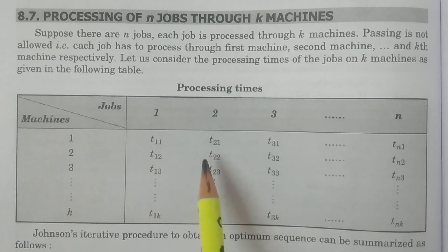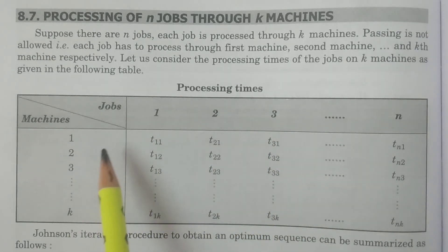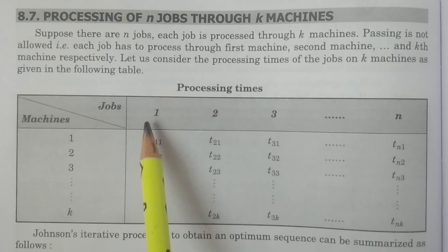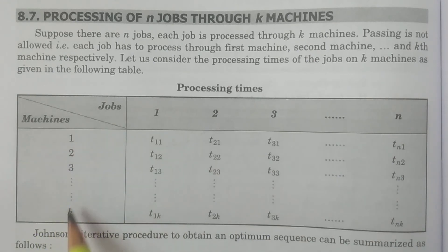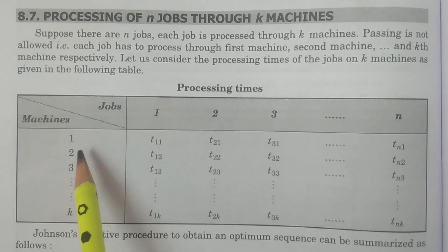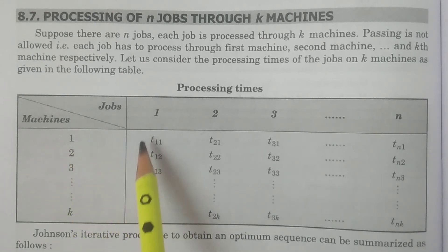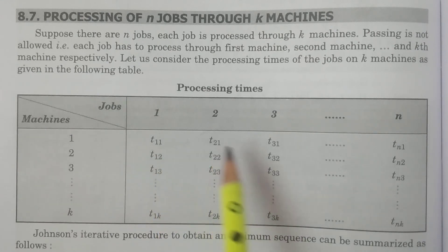For example, this is the table for processing times of n jobs 1, 2, 3 and so on n, and k missions 1, 2, 3 and so on k. For mission 1, the processing times are t11, t21, t31 and so on tn1.